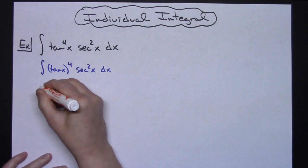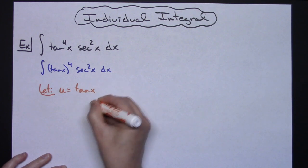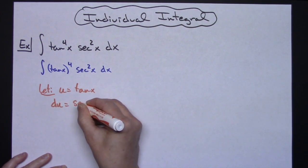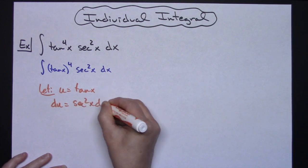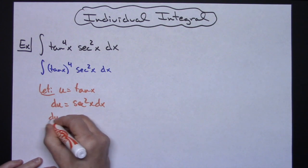So with that being said, I'm going to let my u be tan(x), and then taking the derivative of both sides, du equals sec^2(x)dx. If I solve all the way down for dx, then I'm going to have du over sec^2(x).